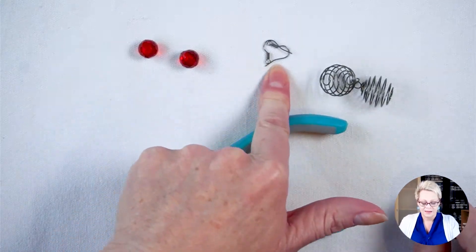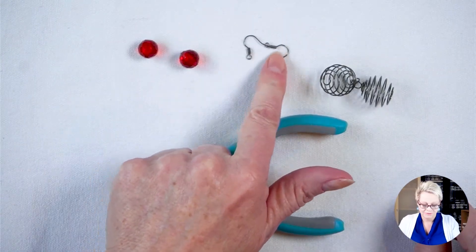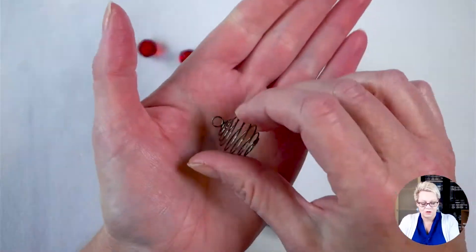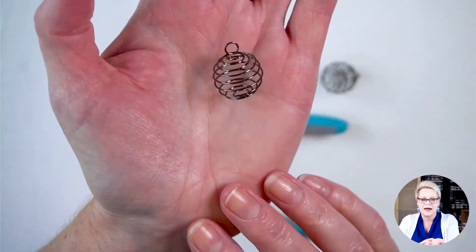I have two ear wires. These ones are 15 millimeters and they've got a twist on them. And I've got here the star of the show, which is two of these cage beads.